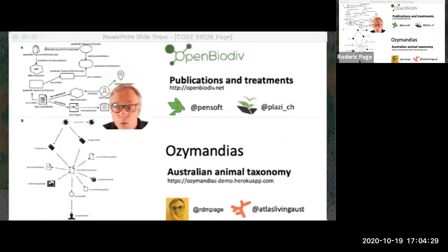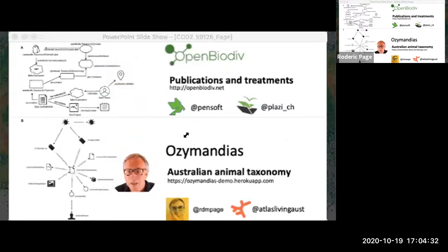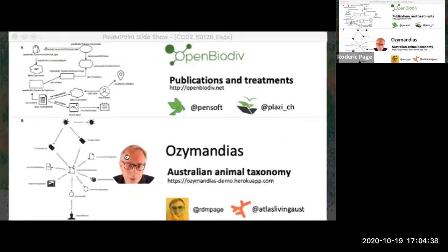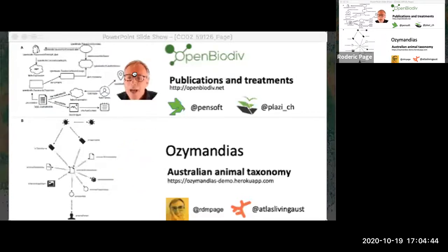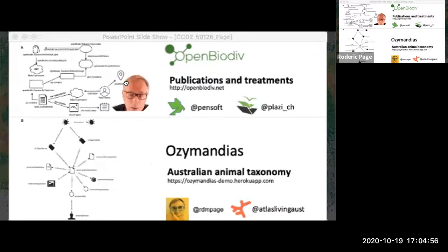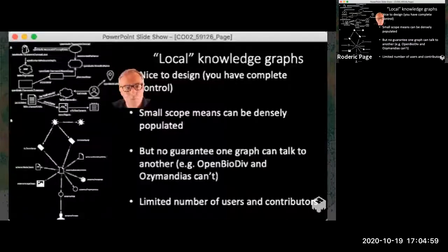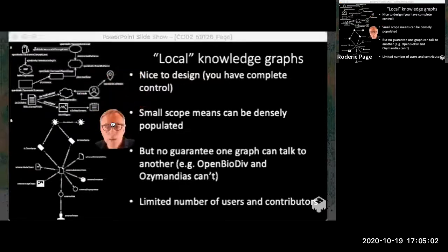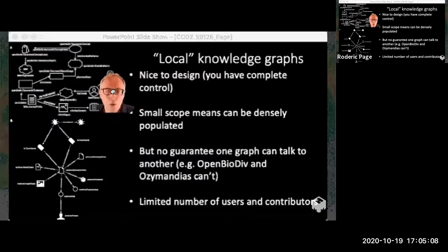One approach is to make what I'll call local knowledge graphs — you get some data and you assemble it. Here are a couple of examples: one is a knowledge graph called Ozymandias, based on Australian biodiversity, and another is OpenBiodiv, run by Pensoft. Both of these are local in the sense that they are fairly restricted in what they cover — Australian animals or publications from Pensoft. You can have a lot of fun doing this because you can act as being in control of that data and assembling it.